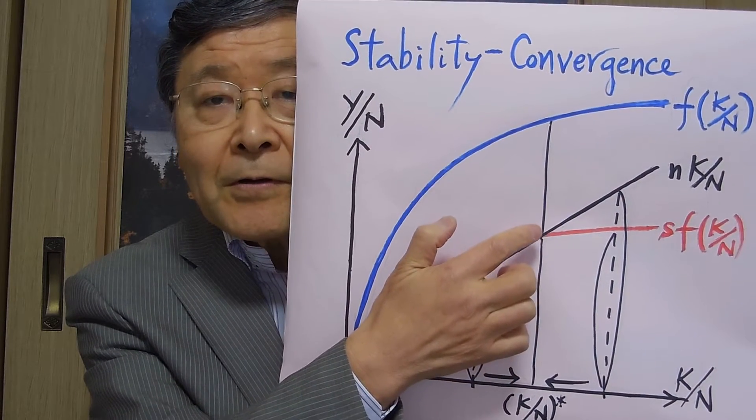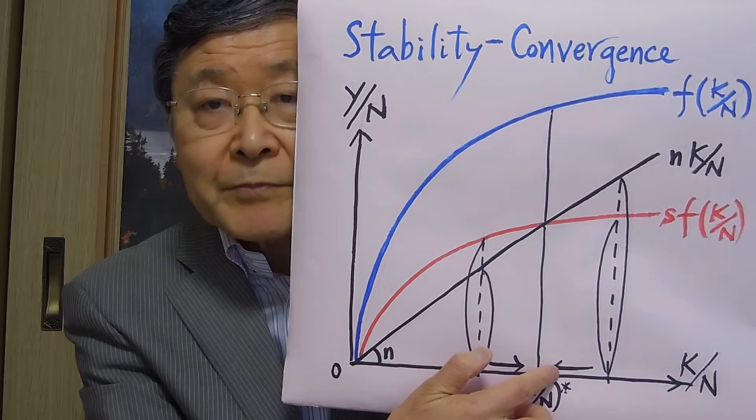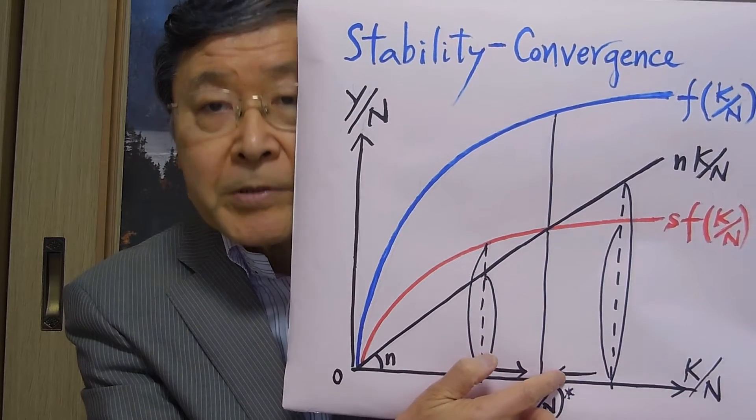Therefore, at this point, capital stock and labor force will grow at the same constant rate. So that's the steady-state equilibrium, which is stable.